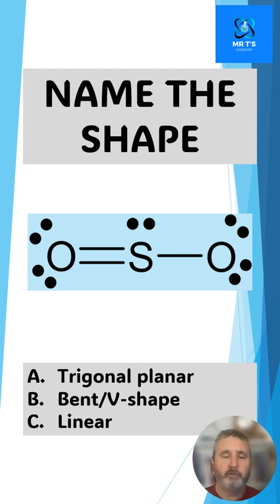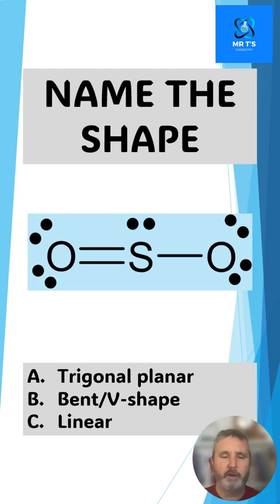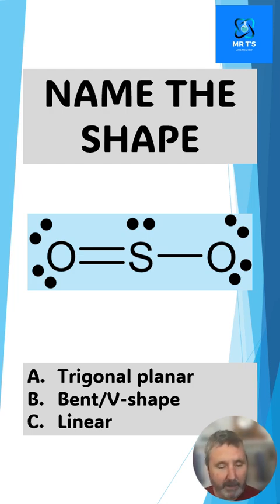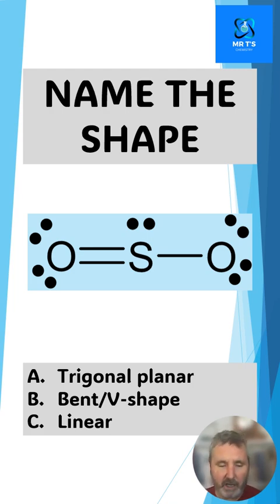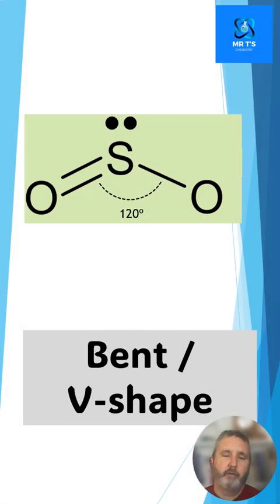If you want to, see if you can think about what the angle might be. So this first shape here is sulfur dioxide. Is it A trigonal planar, B bent or V-shaped, or C linear? Of course this is bent or V-shaped, with angles of 120 degrees.